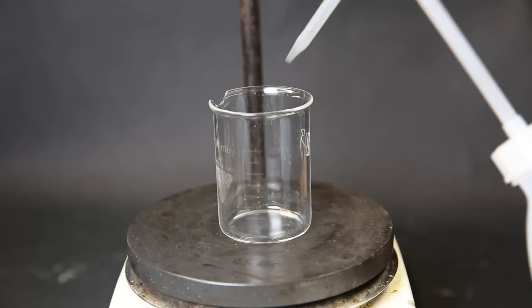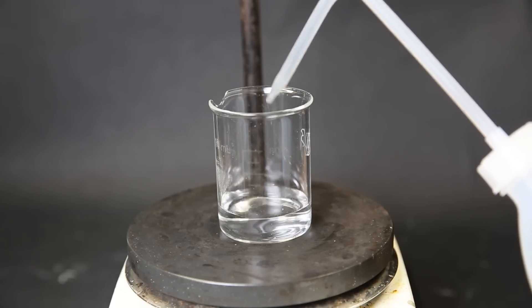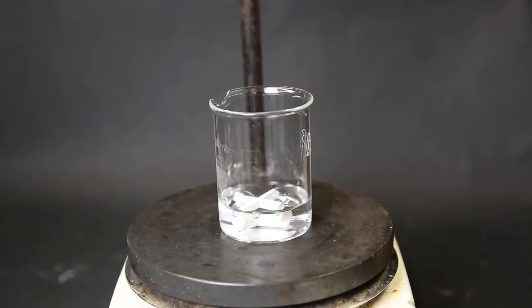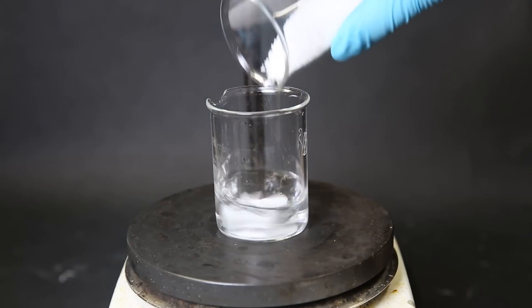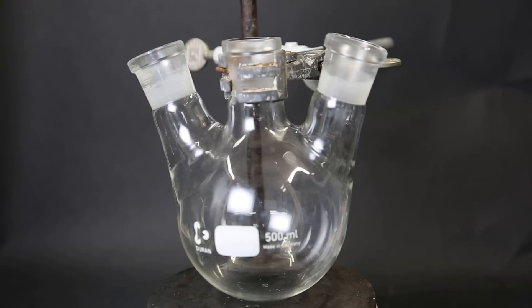First, I have to make a strongly basic solution. So to a beaker, I add in 20 ml of water, and then add 28 grams of 85% potassium hydroxide. I mix it until everything dissolves and then allow it to cool back down to room temperature.